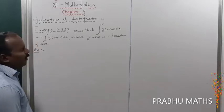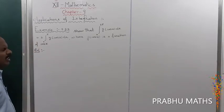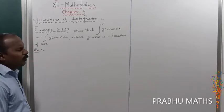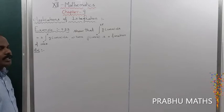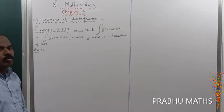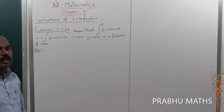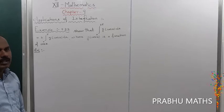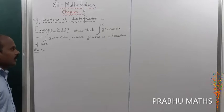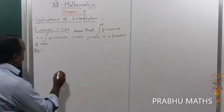We know the formula: integral from 0 to 2a of f(x) dx is equal to 2 times of integral from 0 to a of f(x) dx. That is the formula.